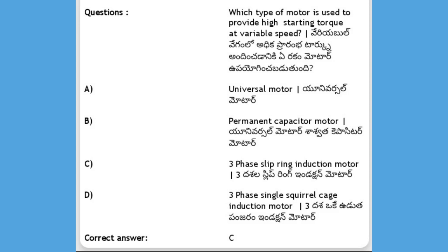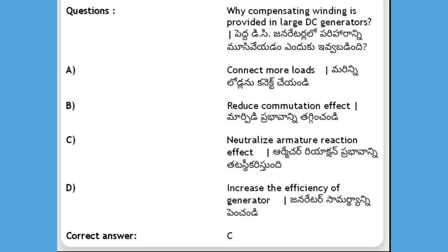Which type of motor is easy to provide high starting torque with variable speed? Options: universal motor, permanent capacitor motor, three-phase slip ring induction motor, three-phase squirrel cage motor. The answer is C, three-phase slip ring induction motor.